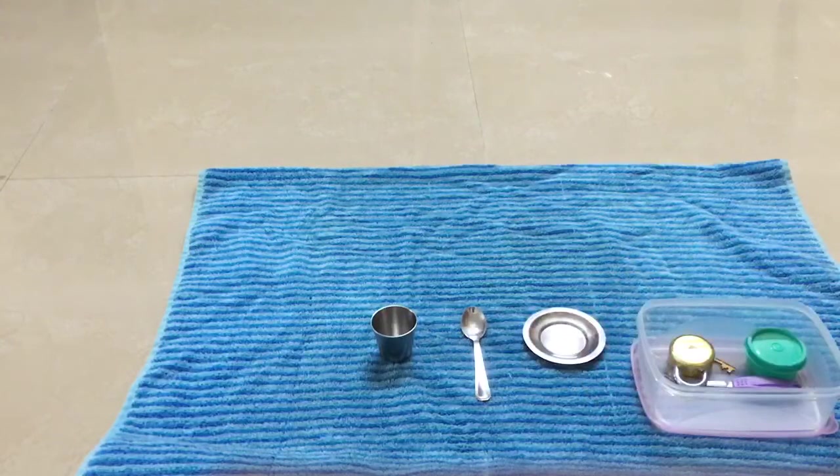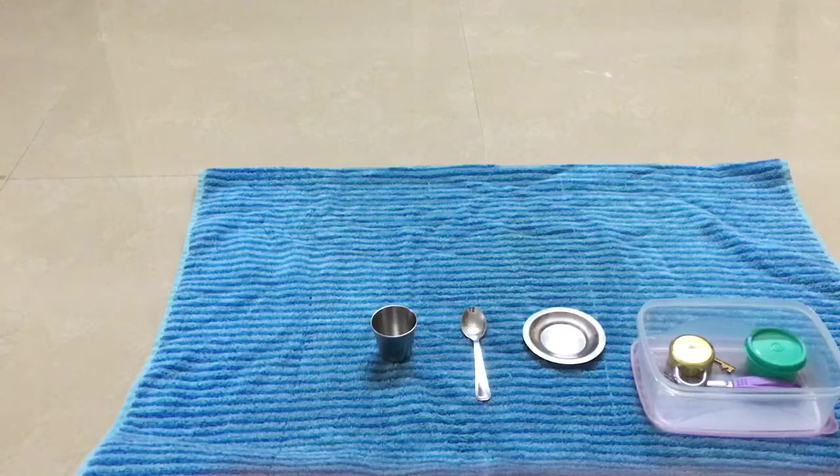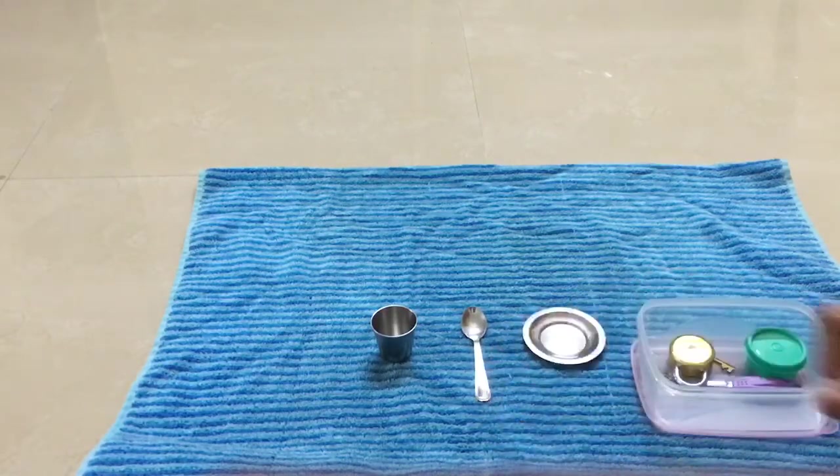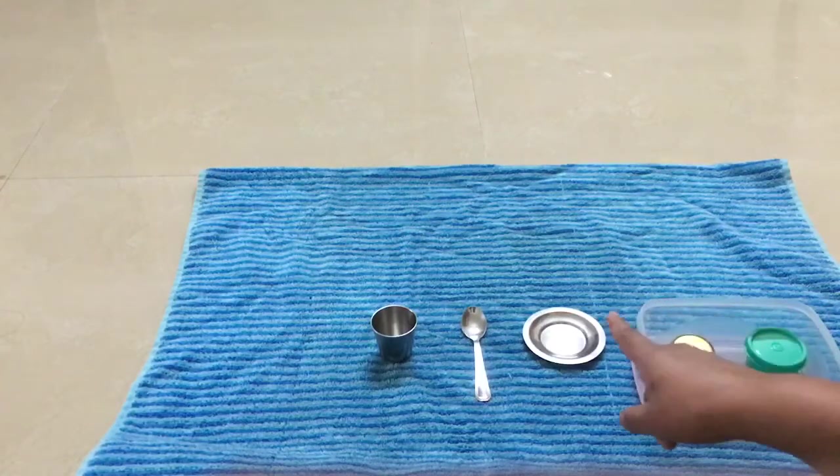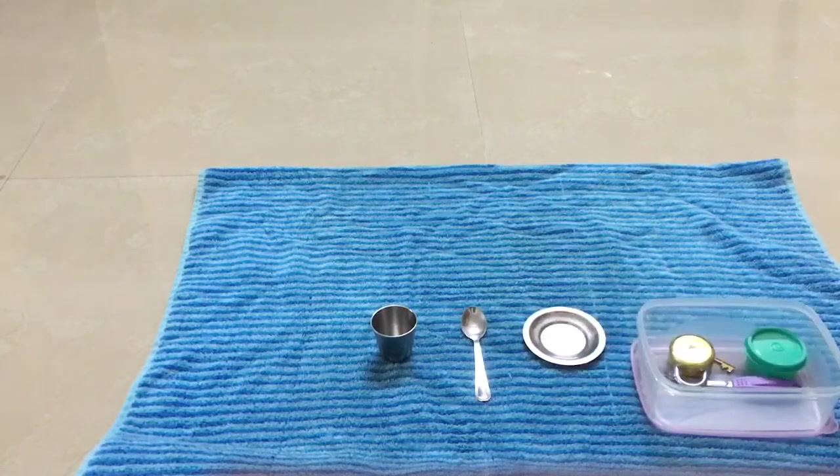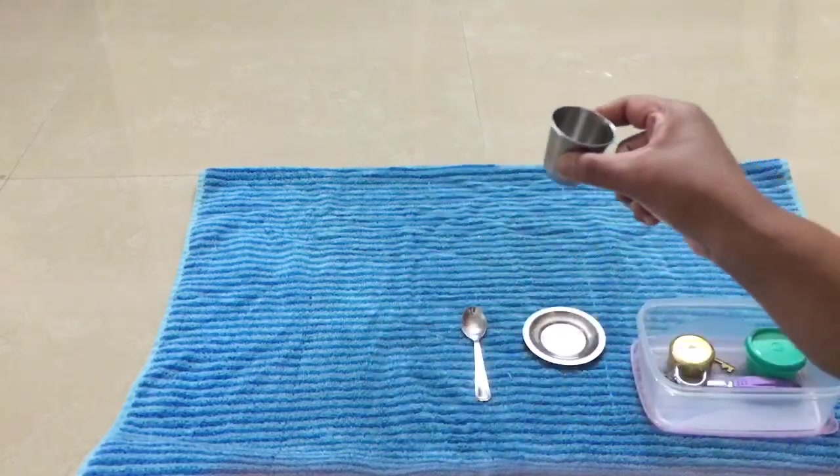The second period is recognition of the objects. Can you show me the spoon? The child might say this is the spoon. Can you show me the plate? The child might show you the plate. Can you hold the glass? The child might hold the glass.